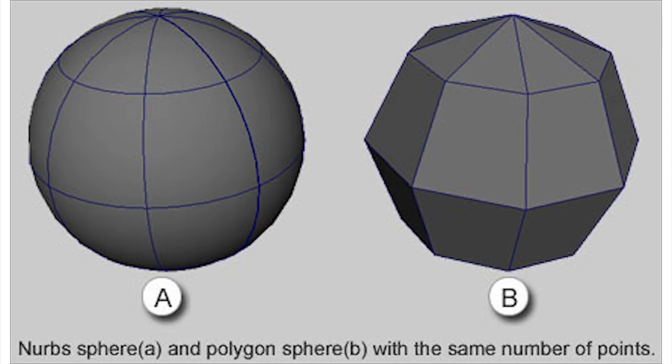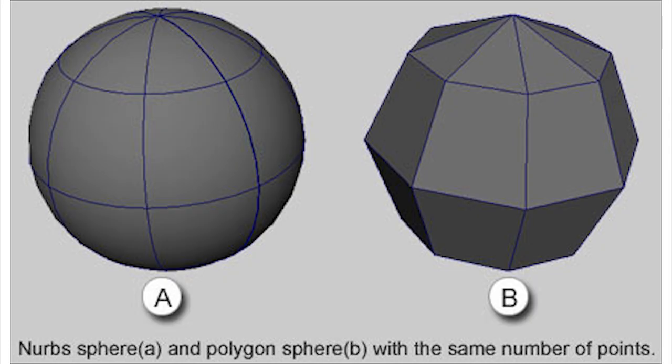There are two main types of 3D models in use in the films and games industries. These are NURBS surfaces and polygonal models. We're mostly going to focus on polygonal models, but I'll also give a quick explanation of NURBS surface modeling.